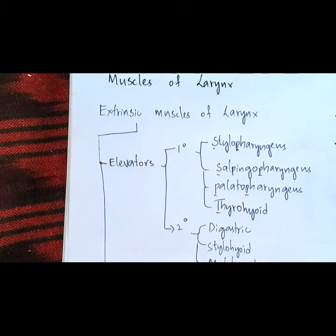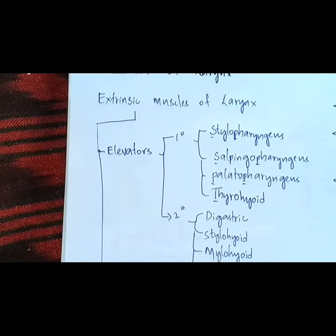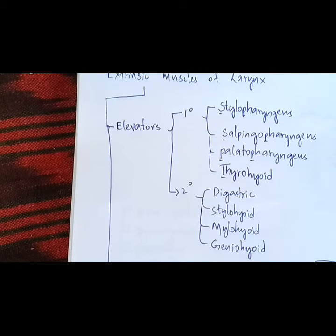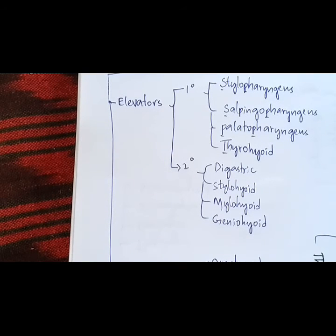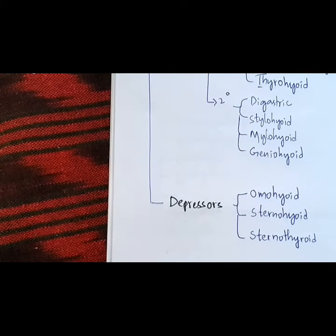Let's revise the muscles again. The extrinsic muscles of larynx can be elevators or depressors. In elevators we have primary elevators and secondary elevators. Primary elevators include SP, SP, PP and T of TOS — they are stylopharyngeus, salpingopharyngeus, palatopharyngeus and thyrohyoid. The secondary elevators are DSMG: digastric, stylohyoid, mylohyoid and geniohyoid. And in the depressors of larynx we have the rest of the TOS: omohyoid, sternohyoid and sternothyroid muscles.